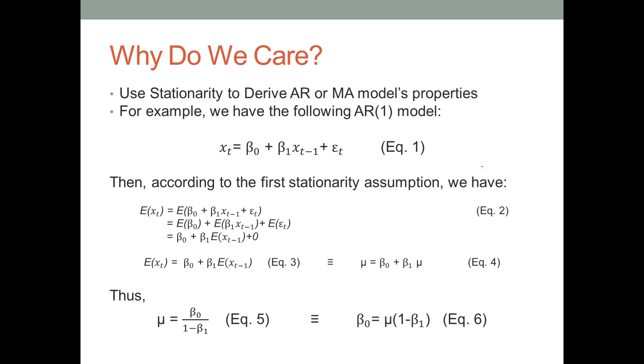If we have an equation, we can calculate the mean on both sides of equation 1, which brings equation 1 to equation 2, as you can see here. E(x_t) equals E(β_0 + β_1·x_{t-1} + ε_t). Notice that the right side of equation 2 is a combination of additions, so we can further split this combination into mean of each component.